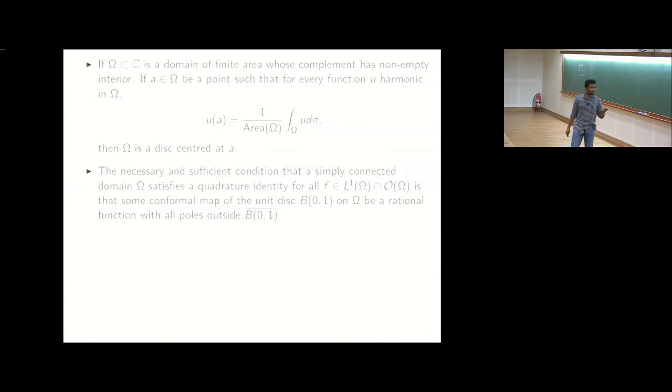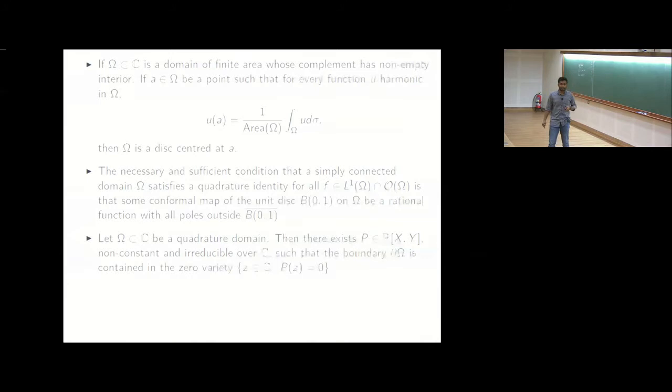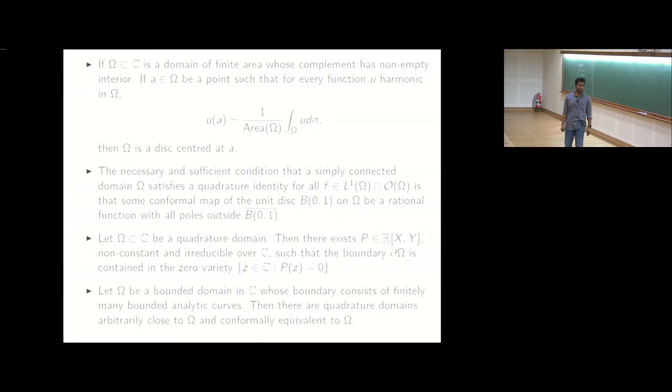And then the impact of the quadrature identity was also discussed extensively, I guess we can realize the boundary as sitting inside the zero set of irreducible polynomial over C with real coefficients.